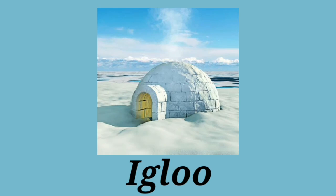What is an igloo? An igloo is a house made of ice. We see igloo houses in the North Pole.